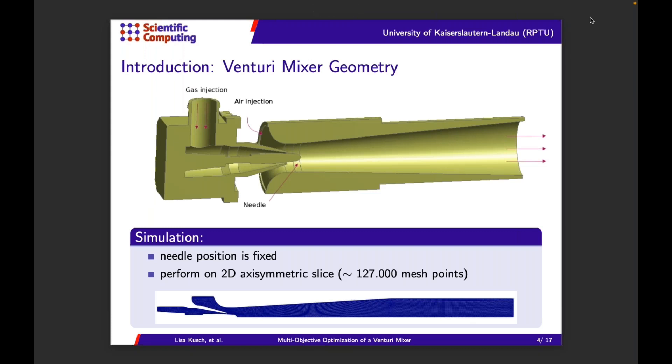Here is the geometry of the Venturi mixer. You can see the air inlet, the gas inlet, and the outlet. The gas inlet is further controlled by a needle, but for our simulations we keep the needle position fixed. We also perform the simulation on a 2D axisymmetric slice, so that will be the geometry we consider.